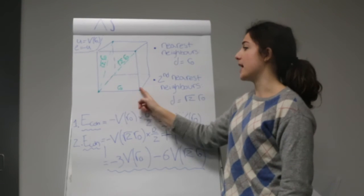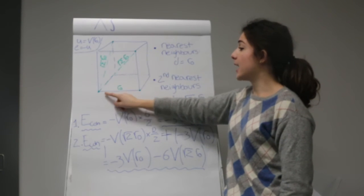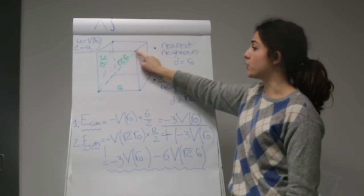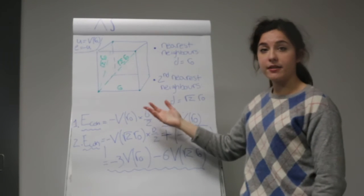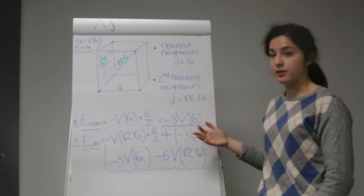And that's the nearest neighbor distance. So if we think about that atom, the nearest neighbors would be at a distance R0, and there's six of them. And the second nearest neighbors would be at a distance R2 of R0. There would be third nearest neighbors as well, and fourth nearest neighbors as well.